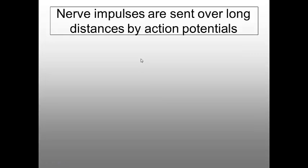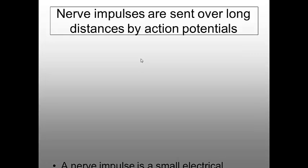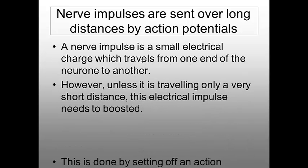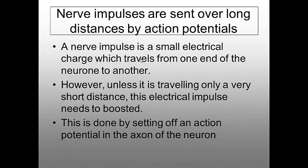So nerve impulses, nerve impulses are sent over long distances by action potentials. A nerve impulse is a small electrical charge that travels from one end of the neuron to another. In the brain, that might be a very small distance indeed, but if you want to send it any further, you need to boost that electrical impulse to keep it going. Otherwise, it will just fade out, and your signal will become weaker and weaker. And we do this by setting off an action potential in the axon of the neuron.